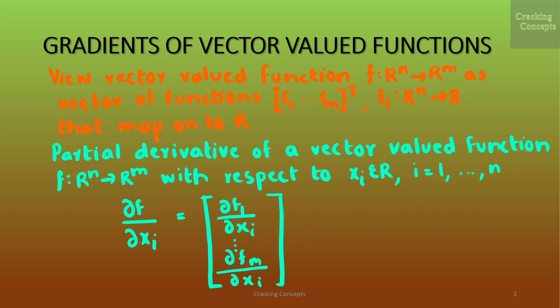Writing the vector valued function in this way allows us to view f from ℝⁿ to ℝᵐ as a vector of functions [f1, ..., fm]ᵀ, where each fi is a function mapping from ℝⁿ to ℝ, i.e. mapping onto the set of real numbers.